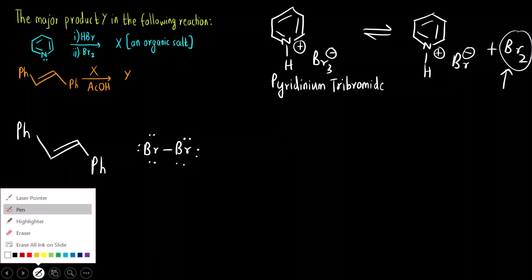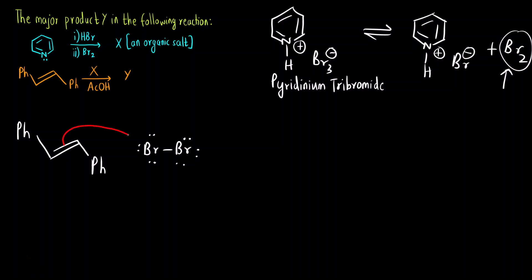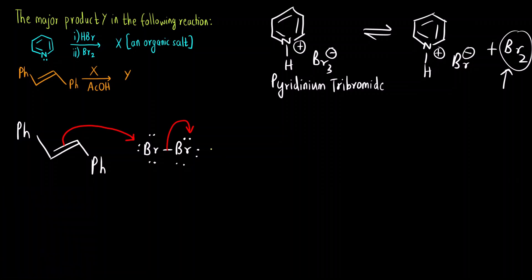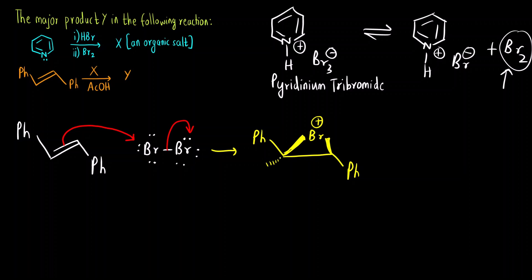Bromine has three lone pairs. The electron-rich alkene attacks Br and one Br⁻ goes away as a leaving group. The intermediate formed is a three-membered ring called the bromonium intermediate, where Br carries a positive charge.